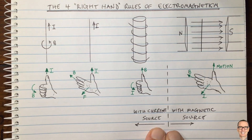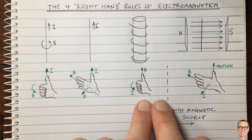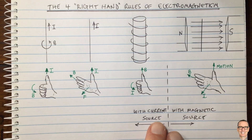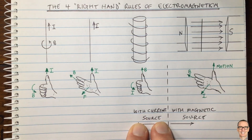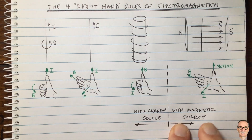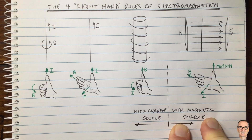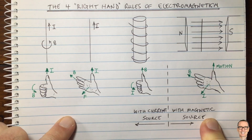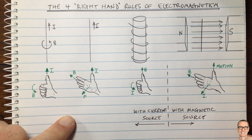So those are the four right-hand rules. Three of them apply when there is a current source in the wire — giving the induced magnetic field or force. The fourth applies when there is a magnetic source and the current is what's induced.